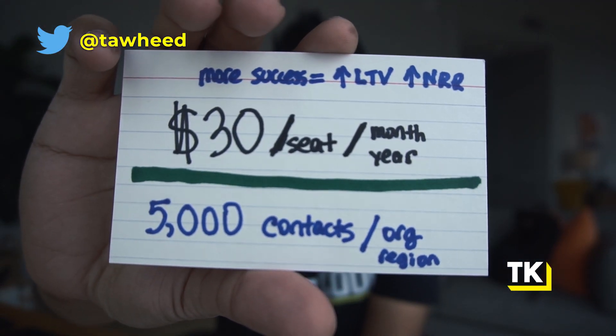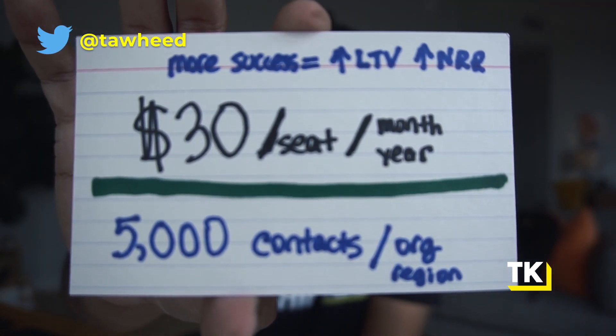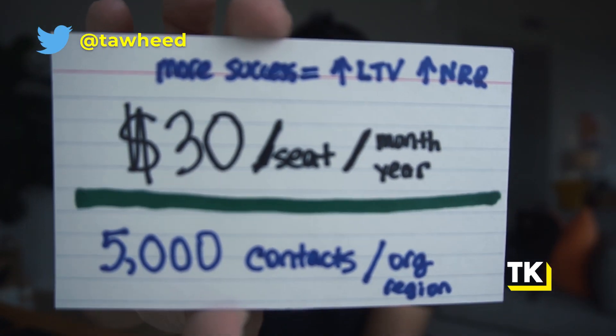For example, with ToutApp, we started with $30 per seat per month. It could have been $30 per seat per year or $30 per month flat. But we understood that ToutApp was a sales platform and customers would have multiple salespeople on the platform. Over time they would be adding more seats, and we wanted to charge on a per month basis. We wanted to make sure that the more successful they are with our product, the more salespeople they hire, and the more money we make over time.